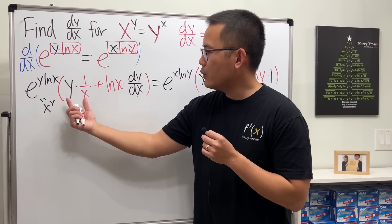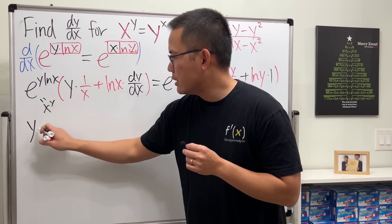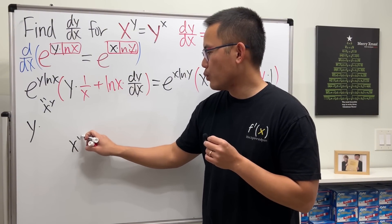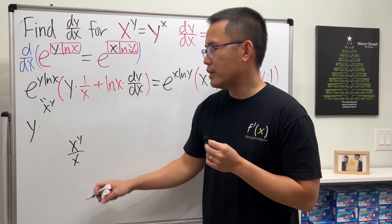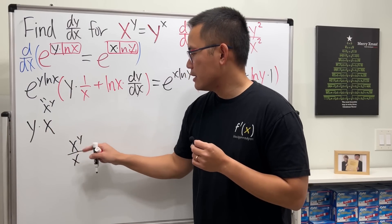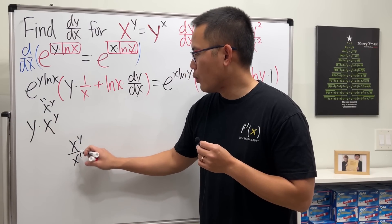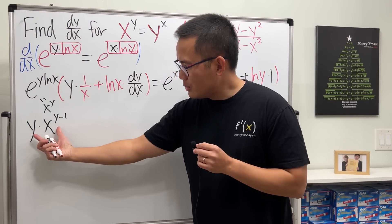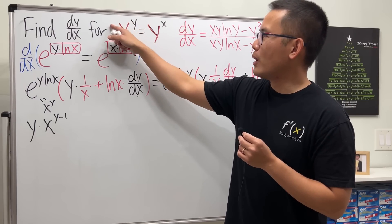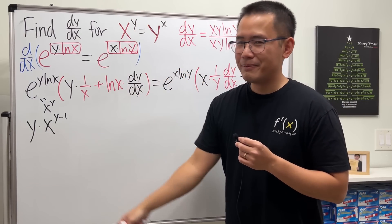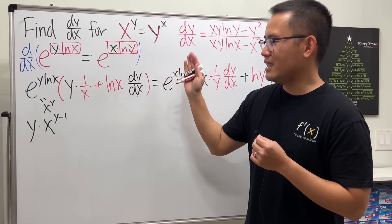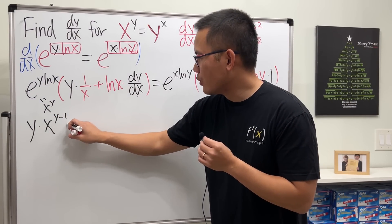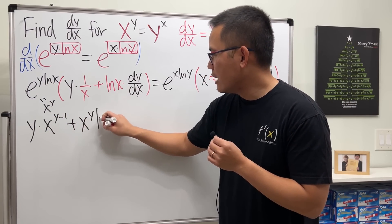I'm going to take x to the y and distribute inside. So we multiply x to the y by each term: first, y over 1, then x to the y times 1 over x is x to the y over x. Since they have the same base, we can write that as x to the y minus 1 — just subtract the exponents. This looks like we applied the power rule bringing y to the front and subtracting one, though of course that's not what we're doing here.